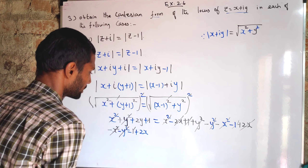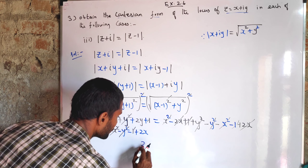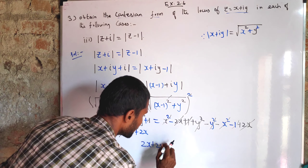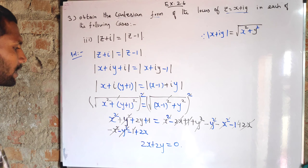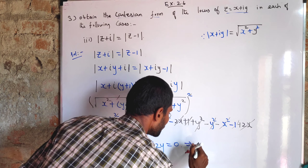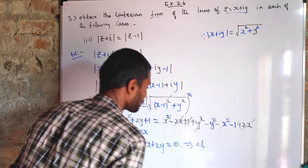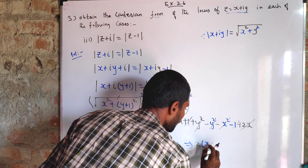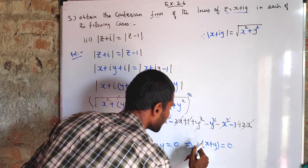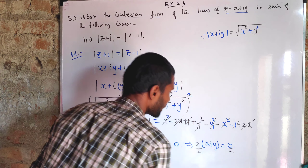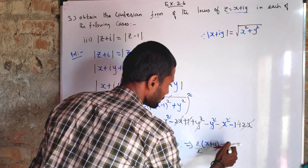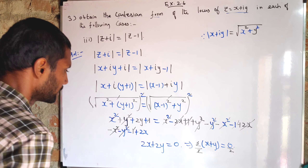So 2x plus 2y equals 0. Dividing both sides by 2, the 2's cancel, giving x plus y equals 0.